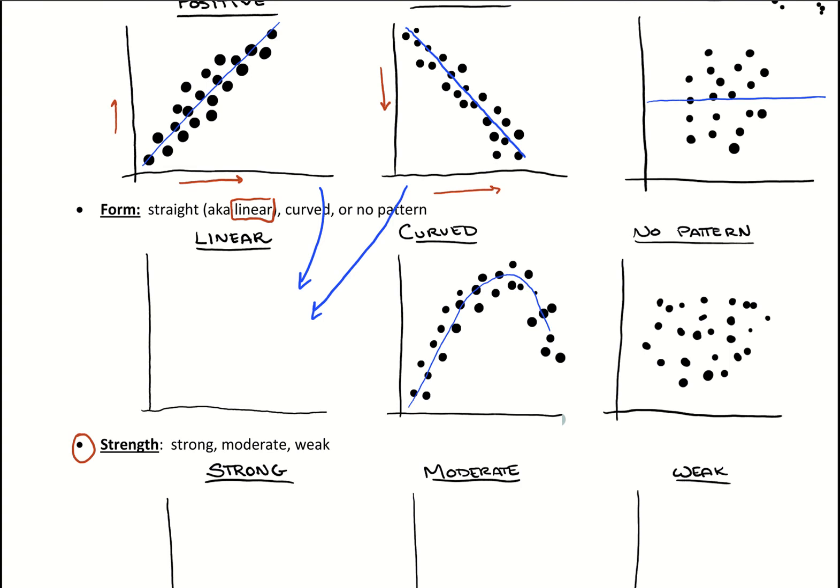So what we sometimes typically do is if we have some expected value for X and we're trying to predict what Y would be, since we don't really see a trend of where we should be landing, all we would use is the average Y value as our best predictor.